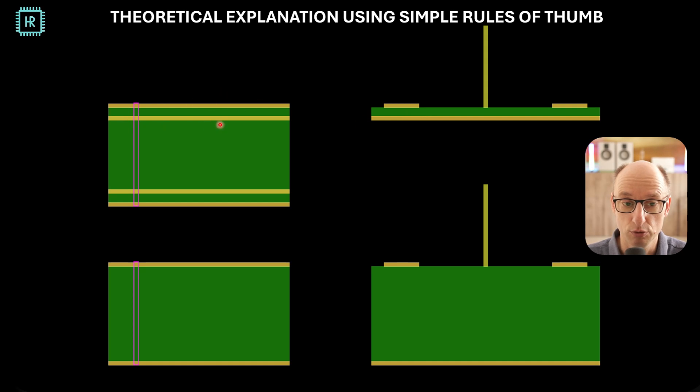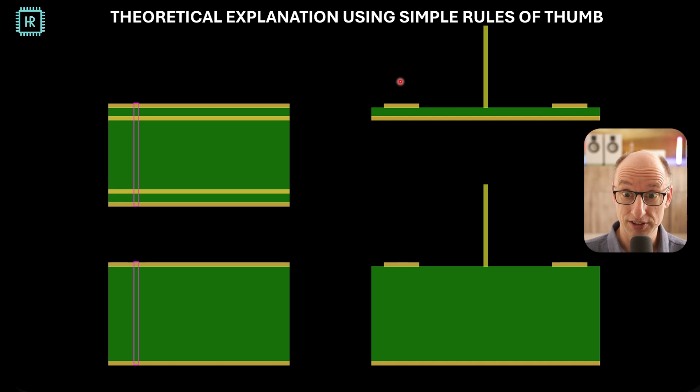Which basically ultimately means there will be much less crosstalk from this trace to that trace. Of course, another really, really simple way to improve the situation is simply to move these traces further apart, and thereby reducing the mutual capacitance between them. Let's summarize the conclusions.